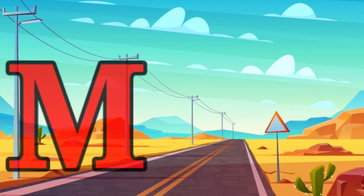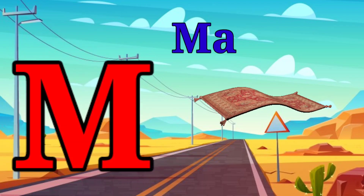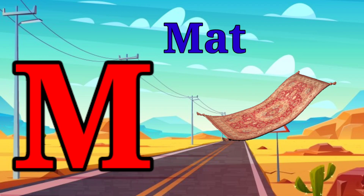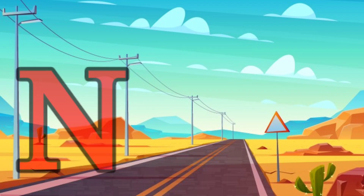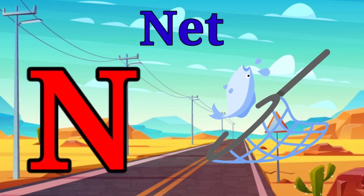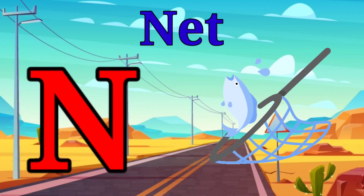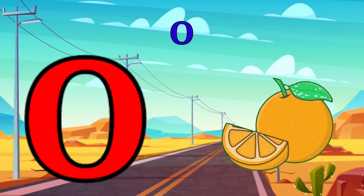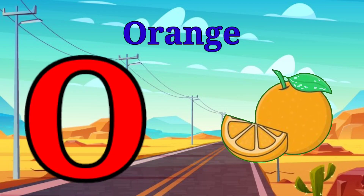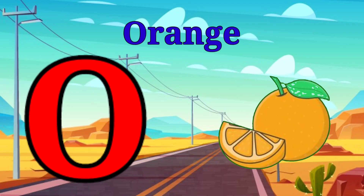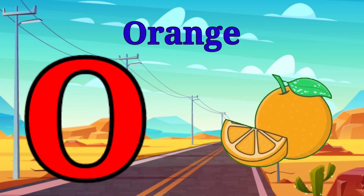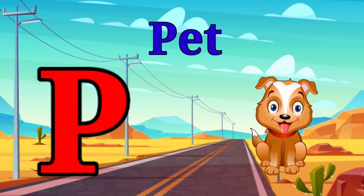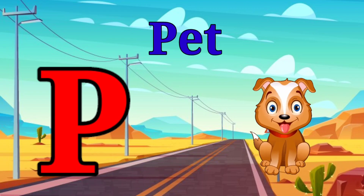M is for mat, m-m-mat. N is for net, n-n-net. O is for orange, o-o-orange. P is for pet, p-p-pet.